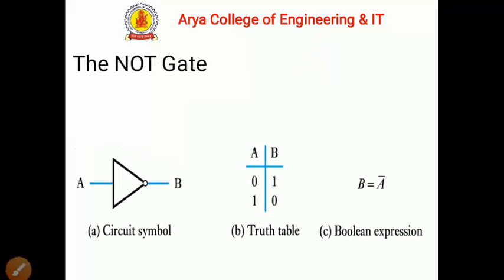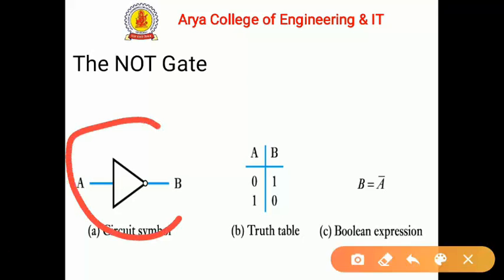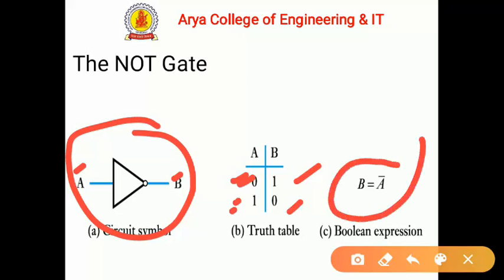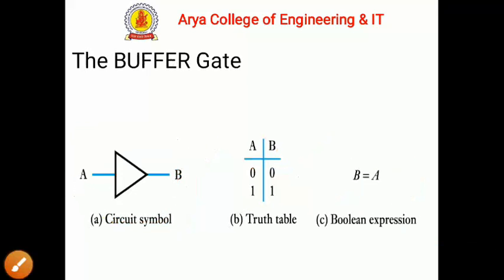The next logic gate is the NOT gate — this is an inverter gate, also called inverter logic. The symbol has one input and one output. For input A, there are two values: 0 and 1. The output will be the opposite, or complement, of the input. If the input is 0 then the output is 1, and if the input is 1 then the output is 0. The Boolean expression is B equals A-bar, where B is the output variable.